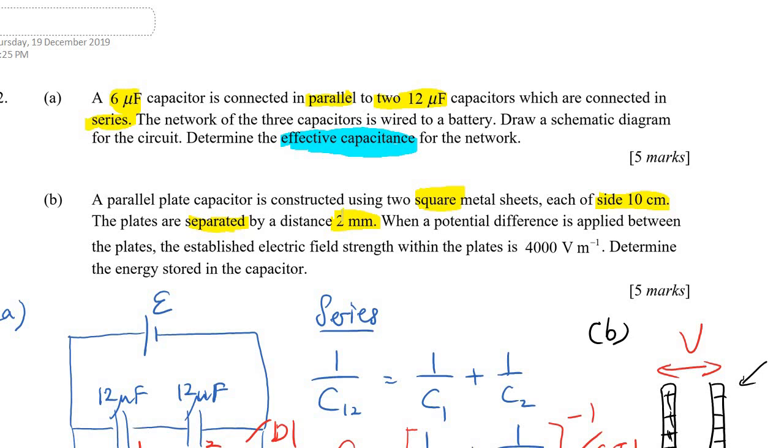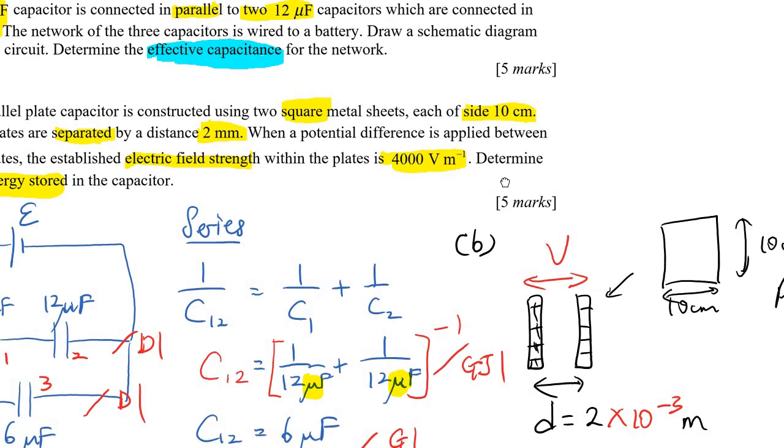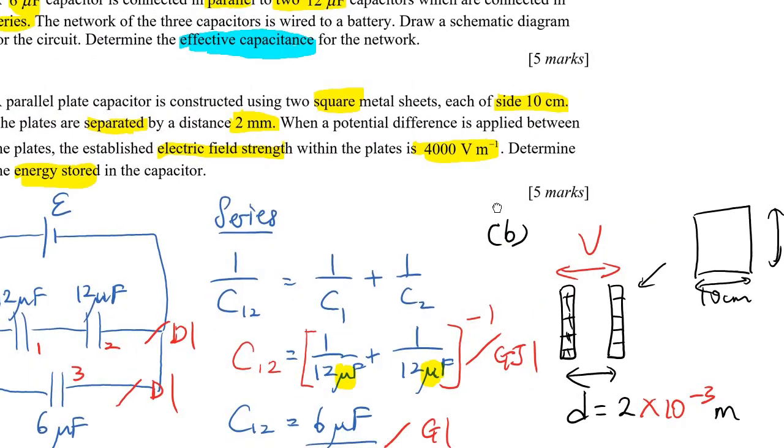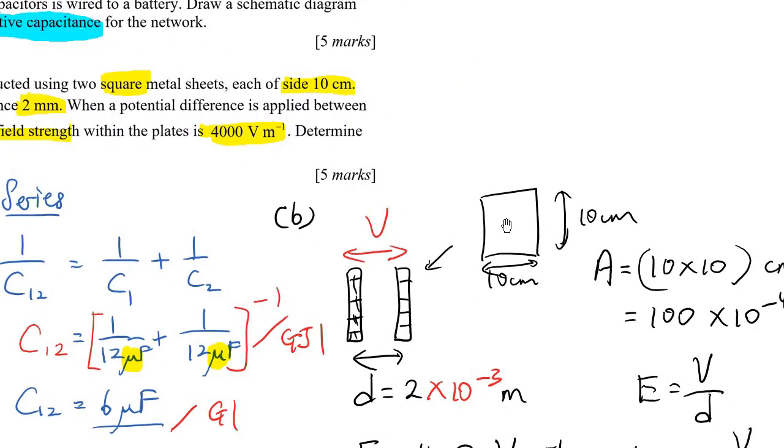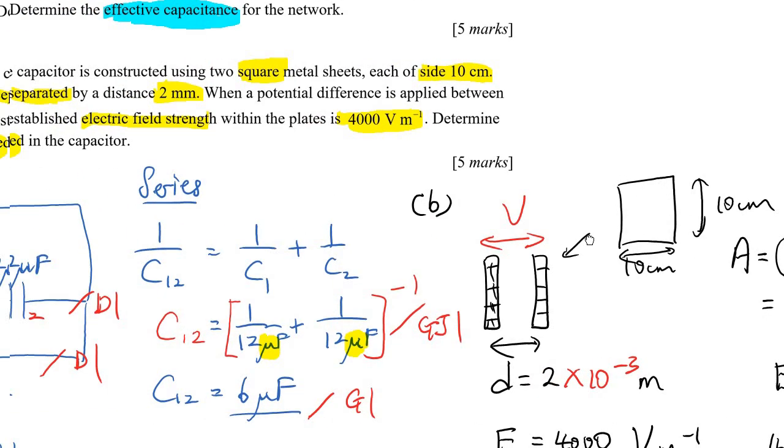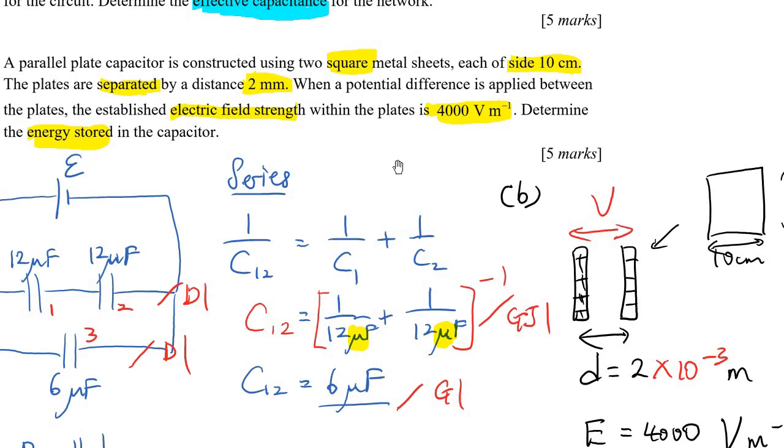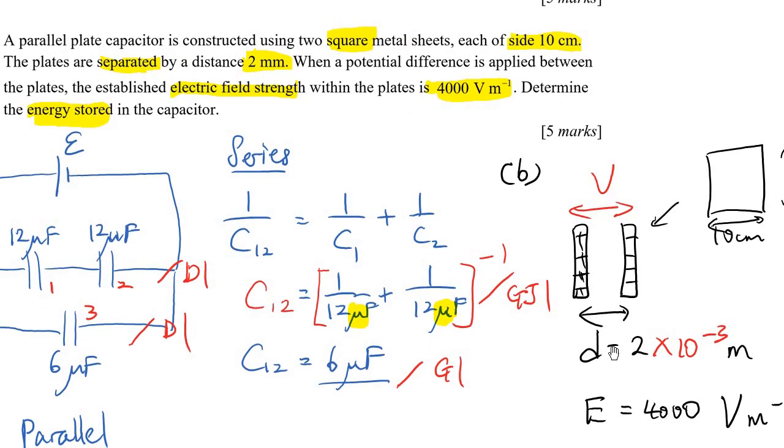The potential difference applied between the plates. So there is electric field strength. Determine the energy stored. You want the energy stored. So this is how you draw the information. It is a square. Size 10 cm. And then the separated by distance D. This is the distance D. D equal to 2 mm.